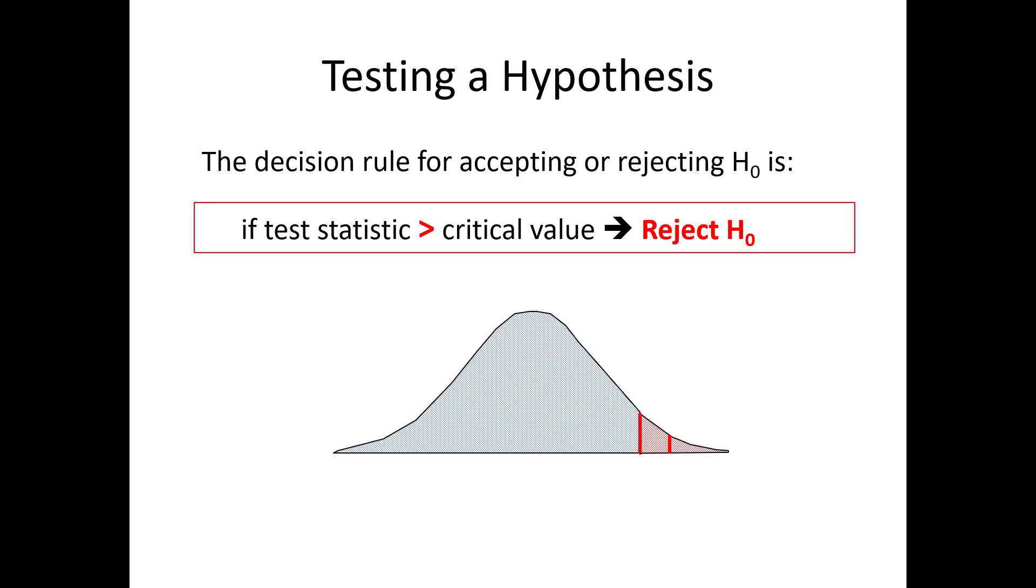It may help to think about it with this diagram. The curve shows the distribution of the test statistic, that is, the values it can take if the null hypothesis is true. For simplicity, let's assume we are conducting a one-tailed test.